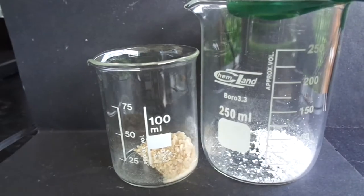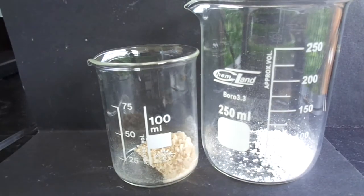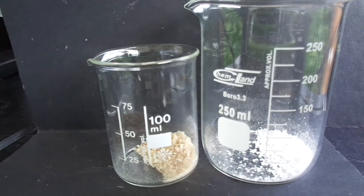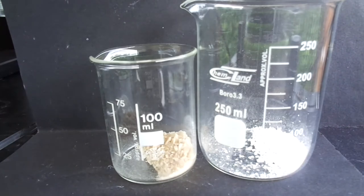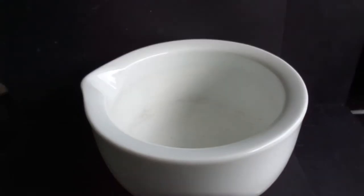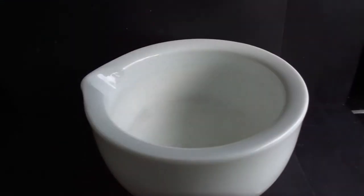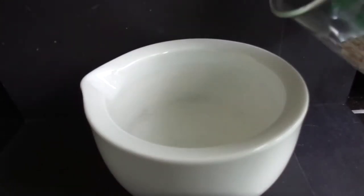I got to weight out about 2.2 grams of phthalic anhydride and about 3.3 grams of resorcinol. So I'm just going to grind up the resorcinol and phthalic anhydride.